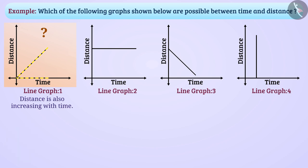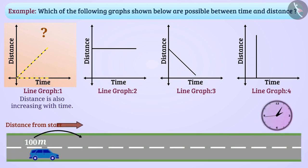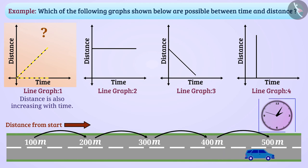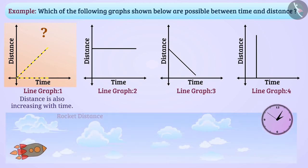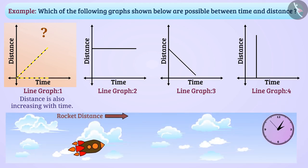Absolutely right! It is possible that distance increases with time. For example, the distance from the start of a vehicle's journey increases over time. The distance travelled by a rocket also increases with time. Therefore, we can say that line graph 1 can be a time-distance graph.